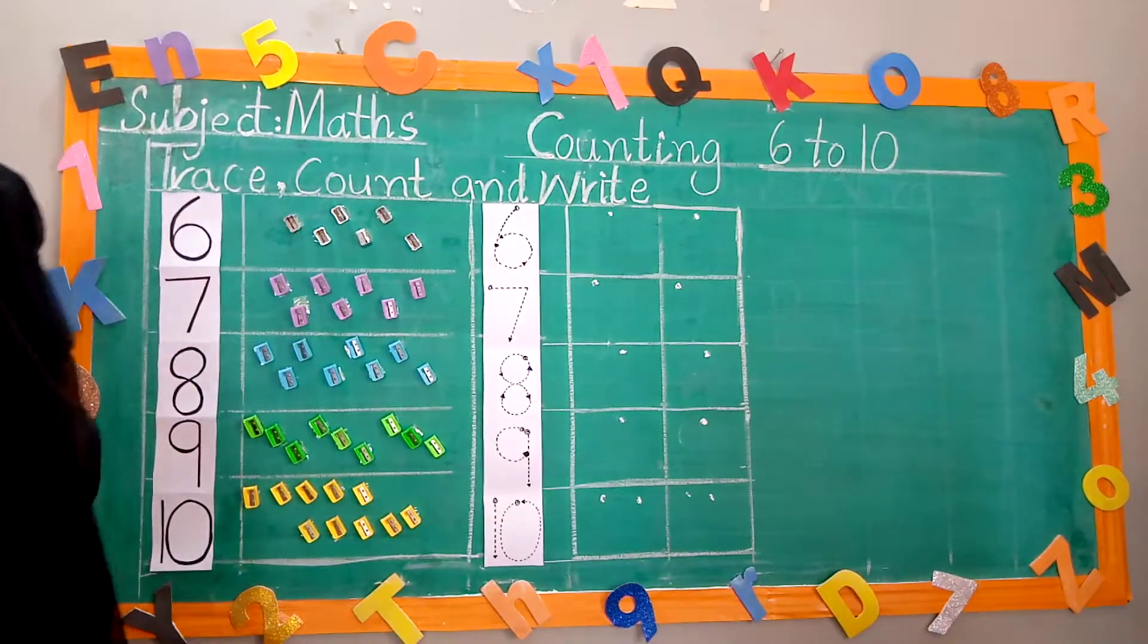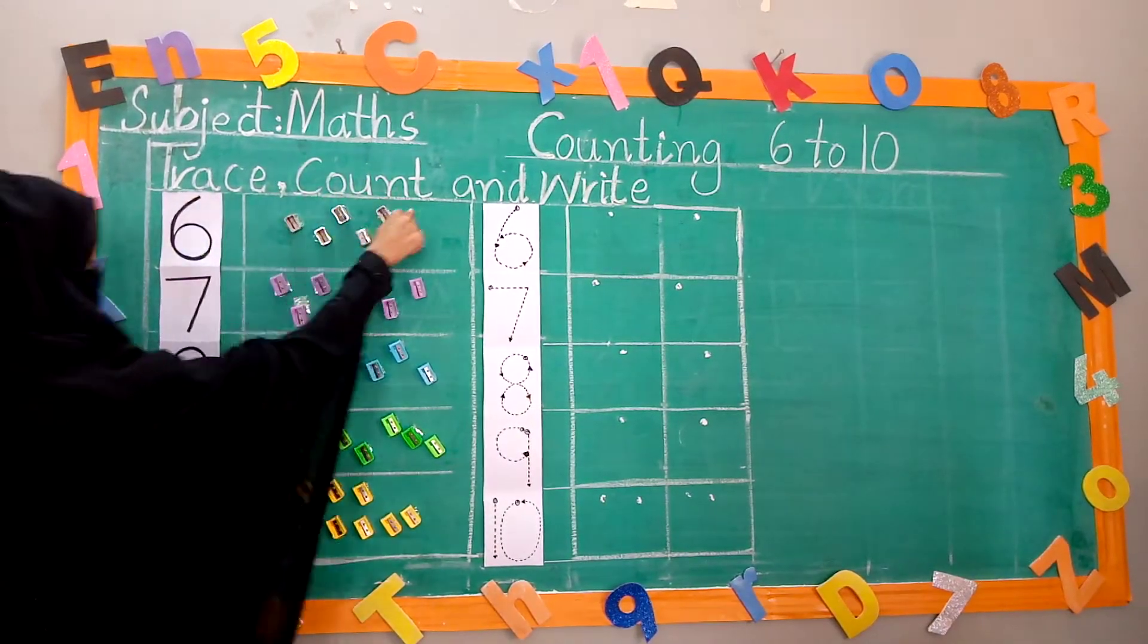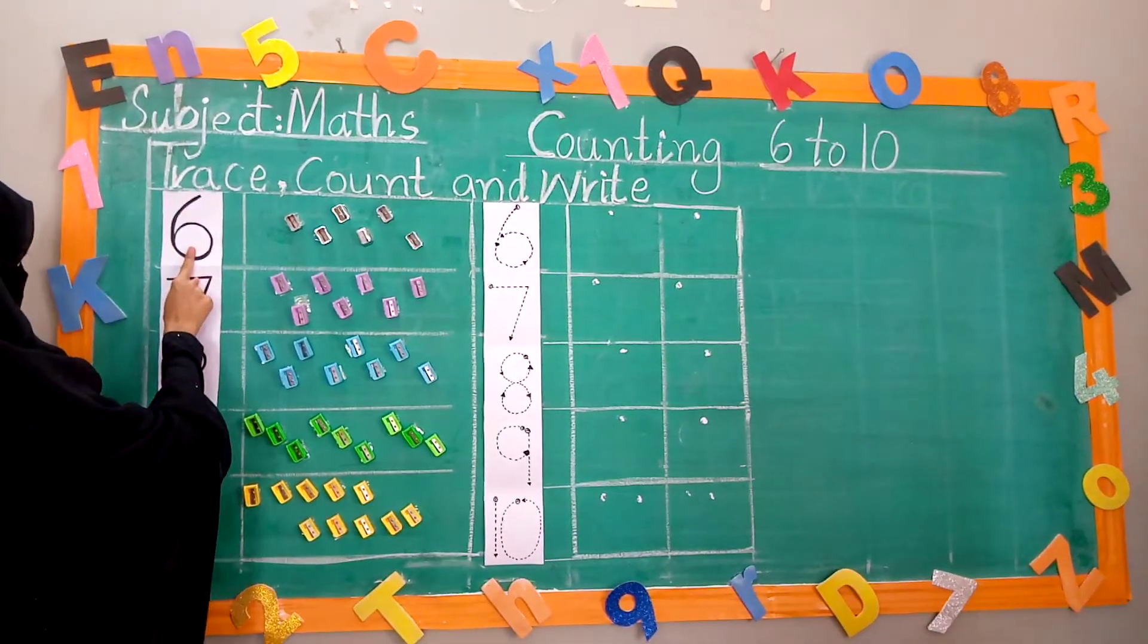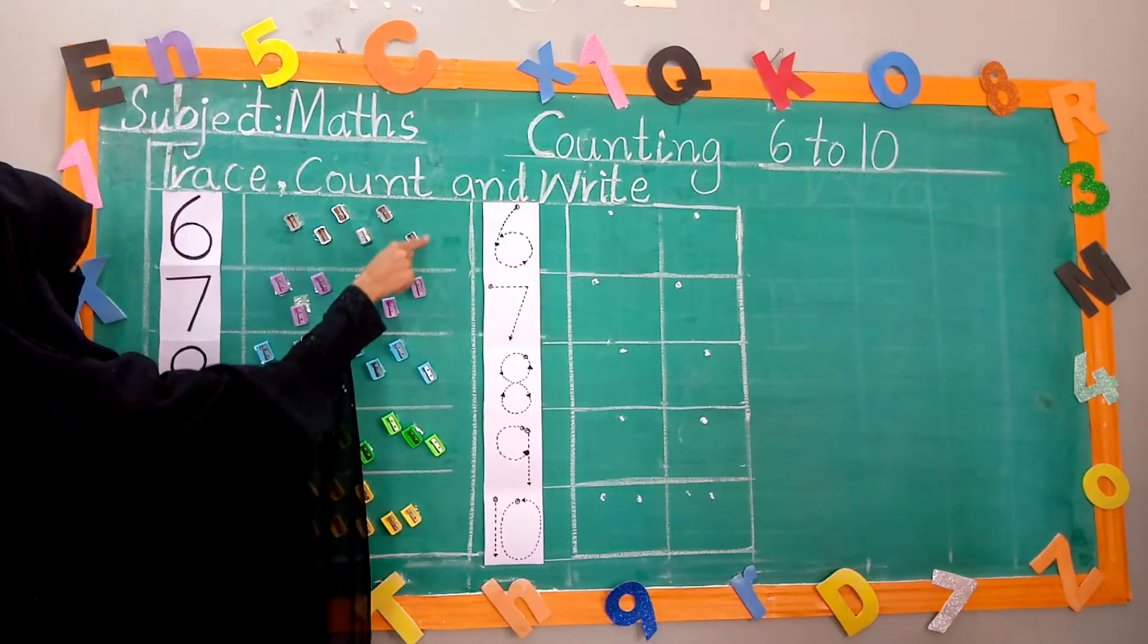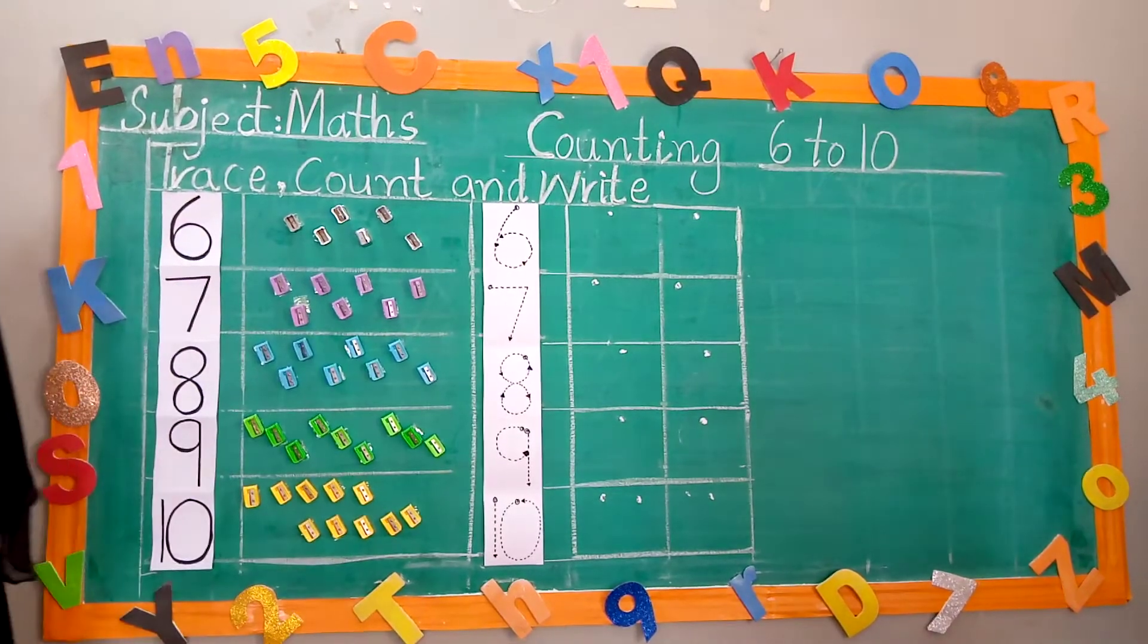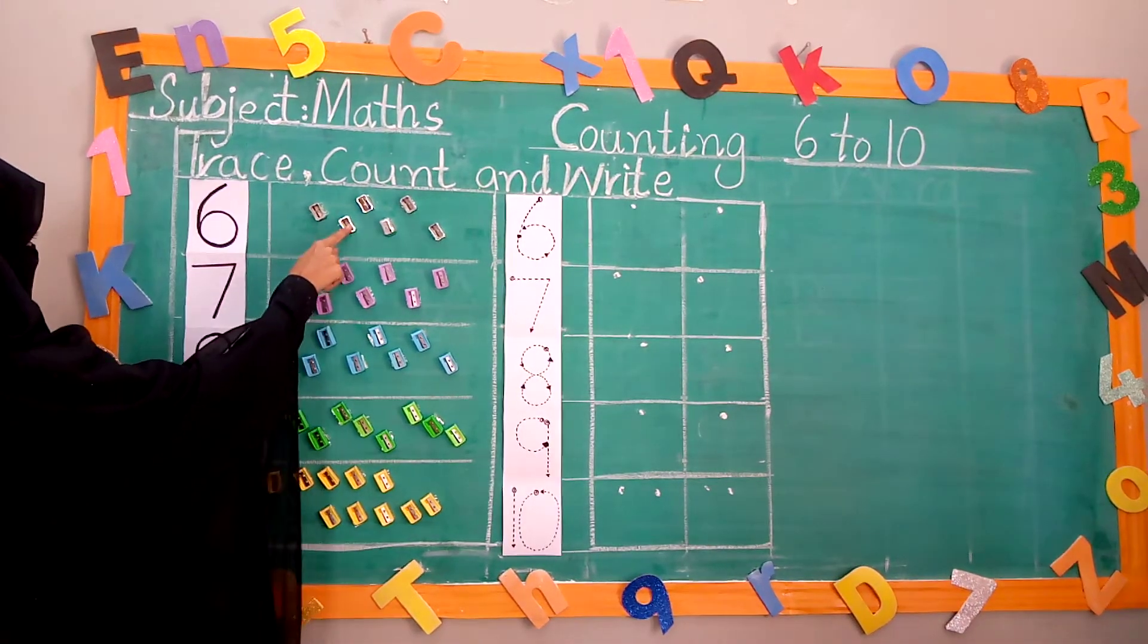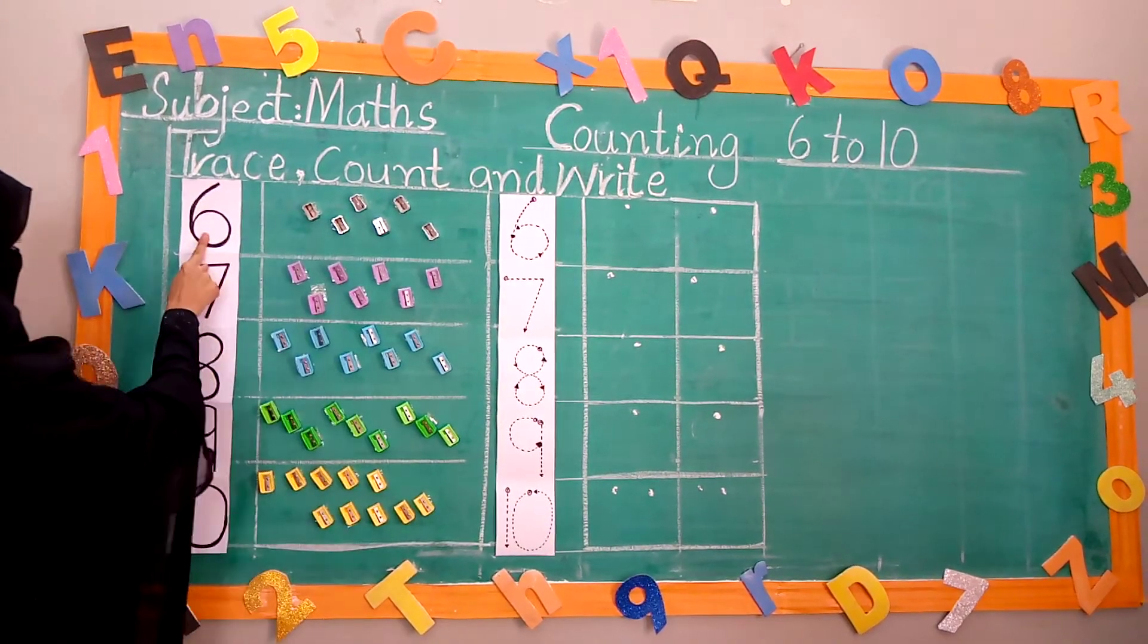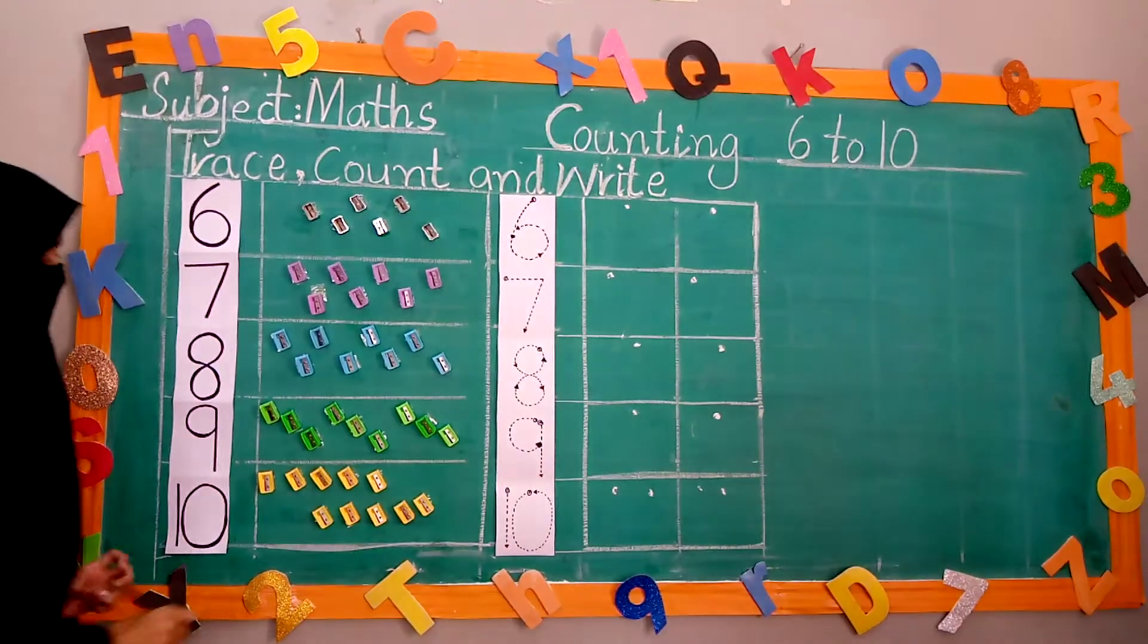Now, look here. We trace, count and write. Look, this is number 6. Now, count with me. 1, 2, 3, 4, 5, 6. Six sharpeners.